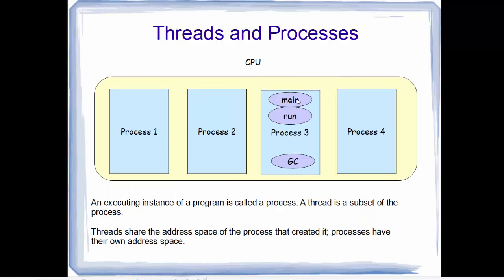There are two key terms: process and thread. Taking the example of a single CPU running multiple processes — process 1 could be a PDF viewer, process 2 a media player, process 3 a browser like Google Chrome, and process 4 a presentation. An executing instance of a program is called a process. So these are all executing instances of different programs.